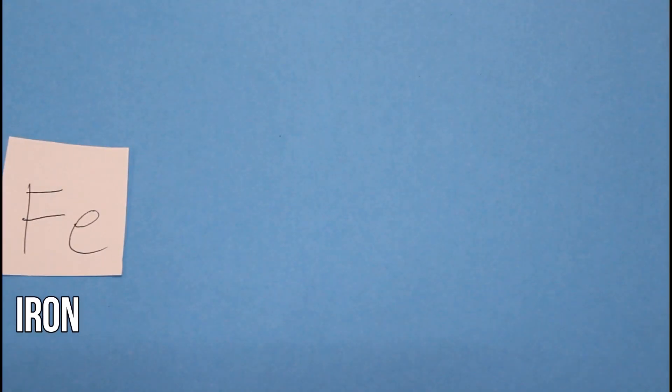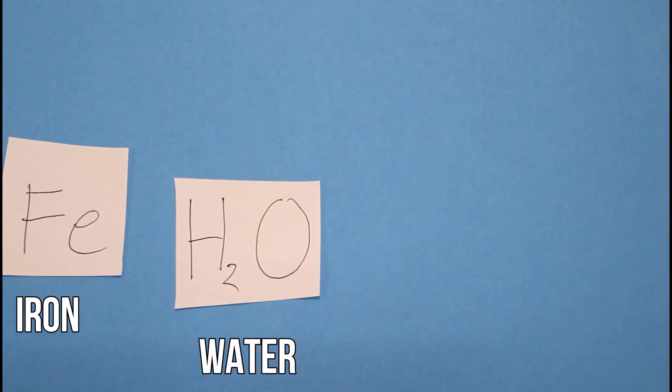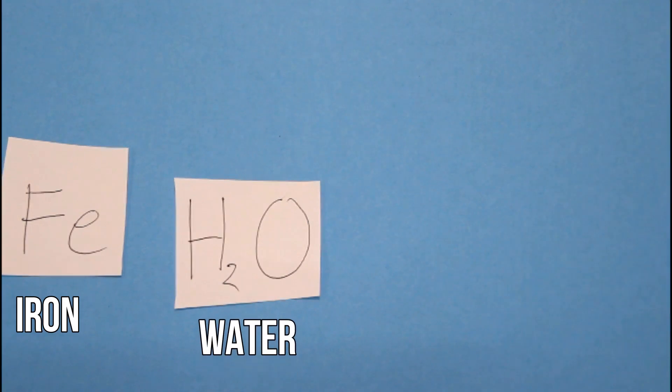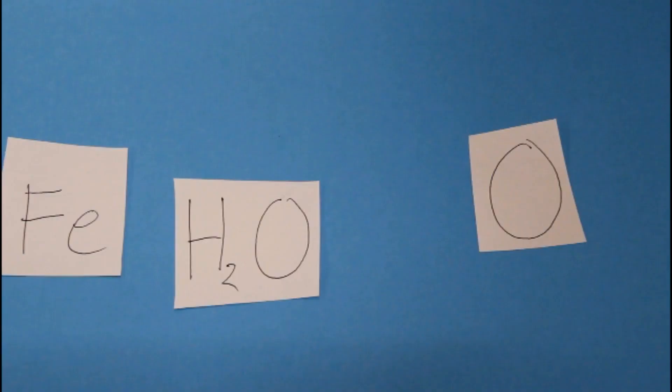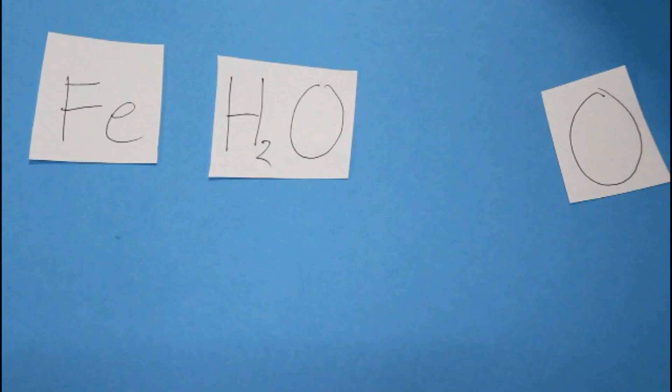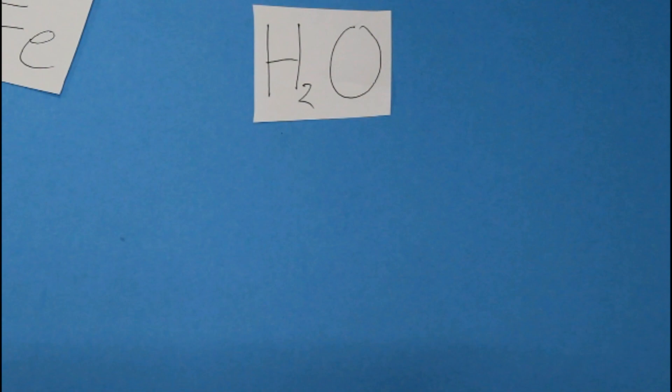As for the rusting of iron, its reactants are iron, dihydrogen monoxide which is commonly known as H2O or water, and oxygen. The process of forming a chemical reaction can be understood better in a chemical equation, wherein the reactants are at the left side and the arrow pointing to the right indicates the formation of the new substances from the reaction.